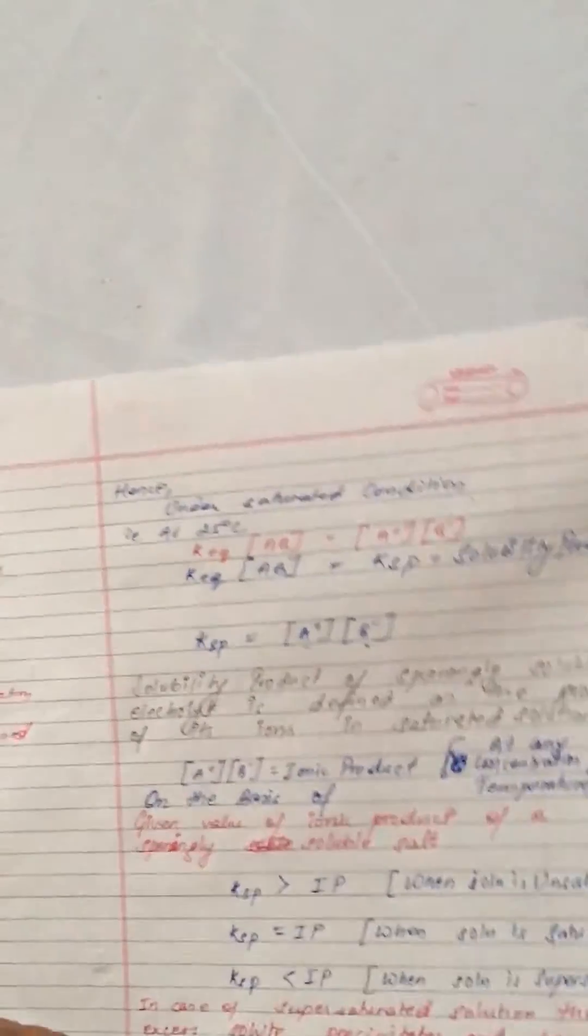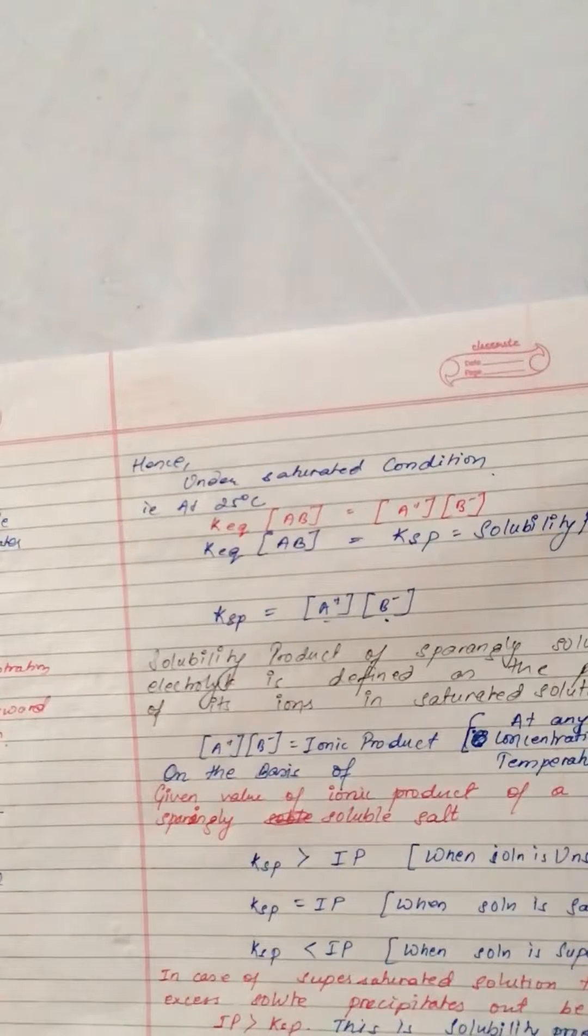Now we're going to learn another important point. Under saturated conditions at 25 degrees centigrade, at equilibrium, KEQ equals KSP, that is the solubility product. KSP equals the reactive product A plus times B minus.